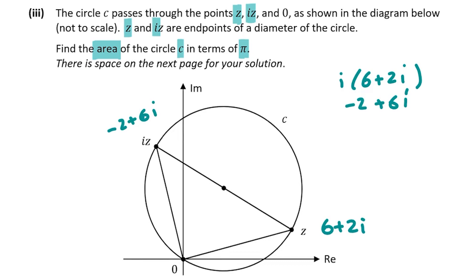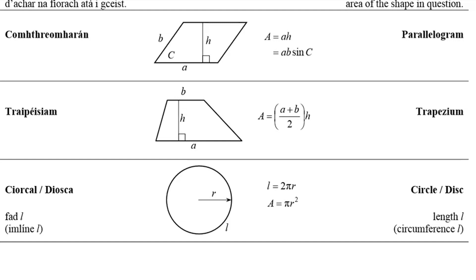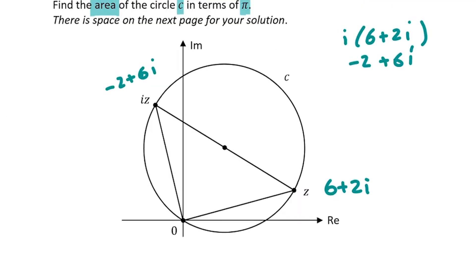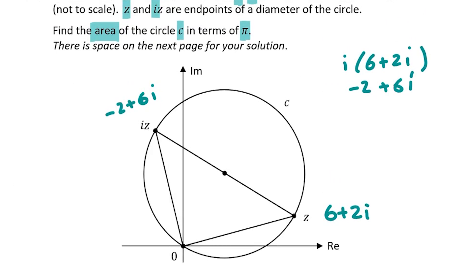To find the area of the circle we need the formula: area equals pi r squared, from the log tables on page 8. To find the radius, we'll use the modulus of z and iz to find the diameter. The modulus of a complex number is its distance to the origin. We also know that any triangle inscribed in a semicircle is a right-angle triangle, which applies here since z and iz are endpoints of a diameter.